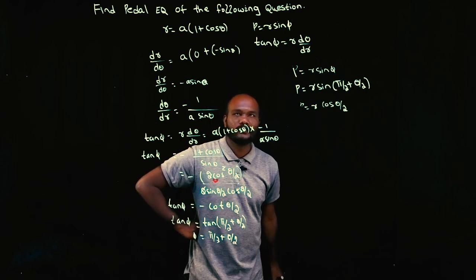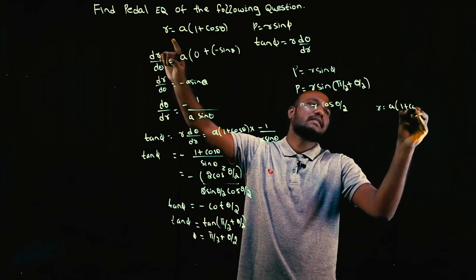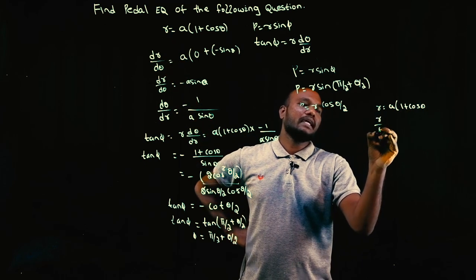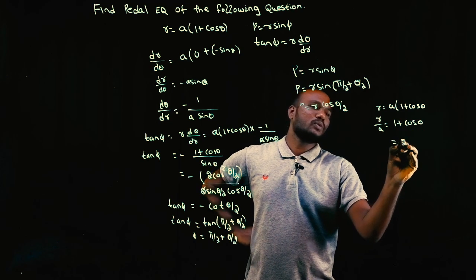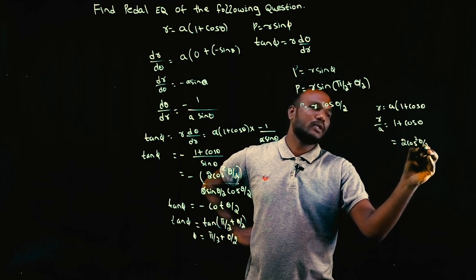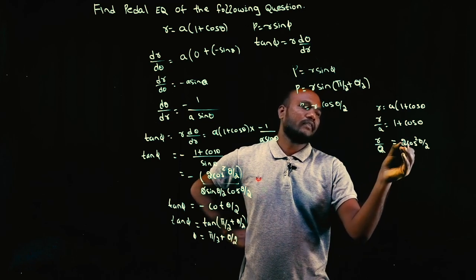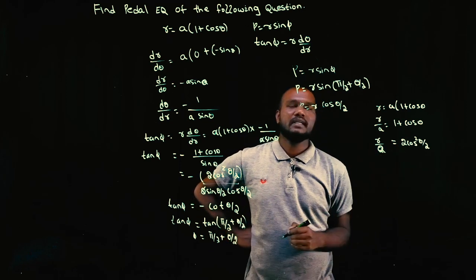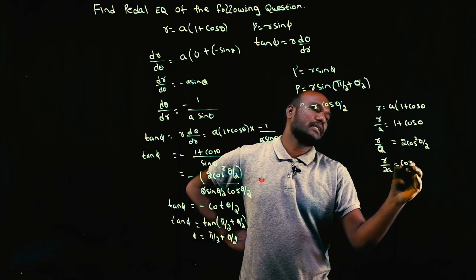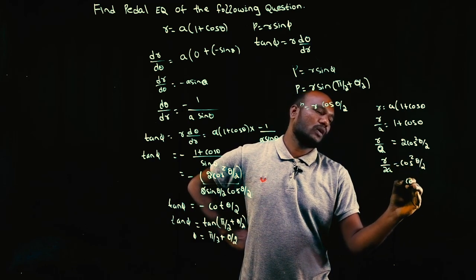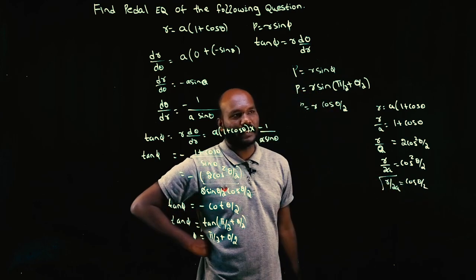How to find cos theta by 2? See here, the question is given as R is equal to A into 1 plus cos theta. So R by A is equal to 1 plus cos theta. 1 plus cos theta is 2 cos square theta by 2. That is the value of R by A. You can rearrange this: R by 2A is equal to cos square theta by 2. So cos theta by 2 value will be equal to root of R by 2A.